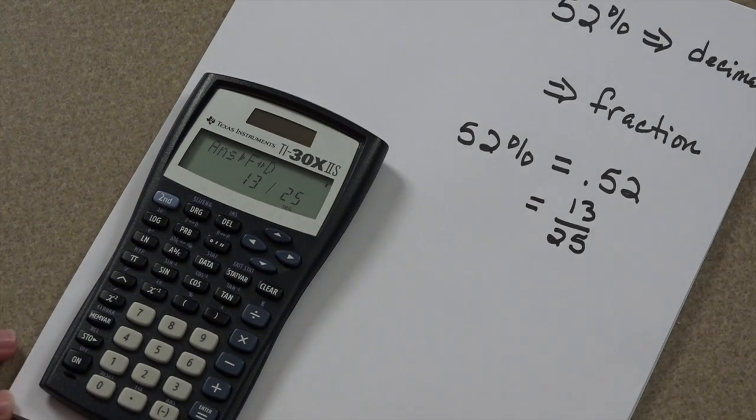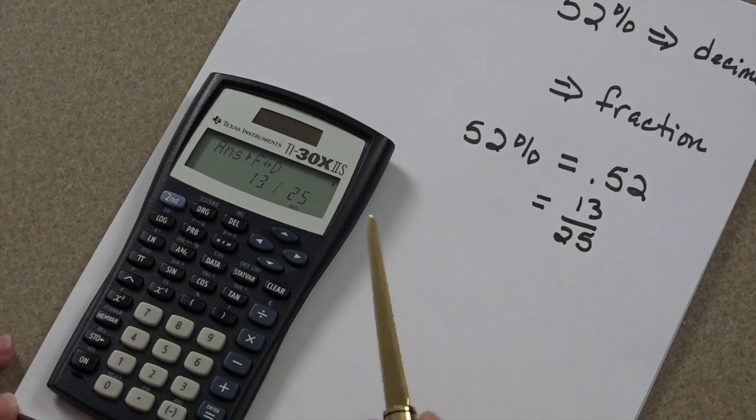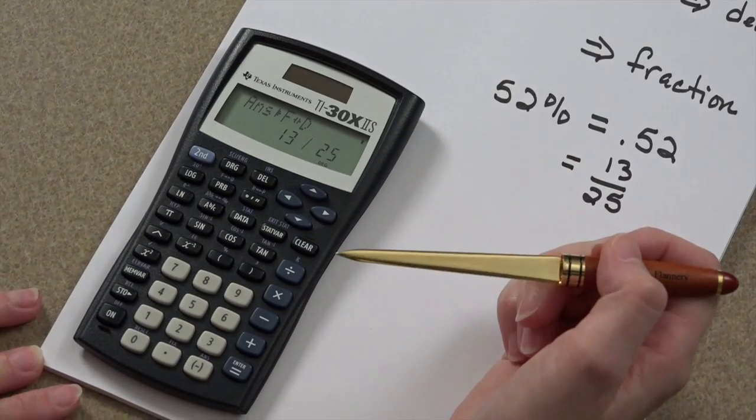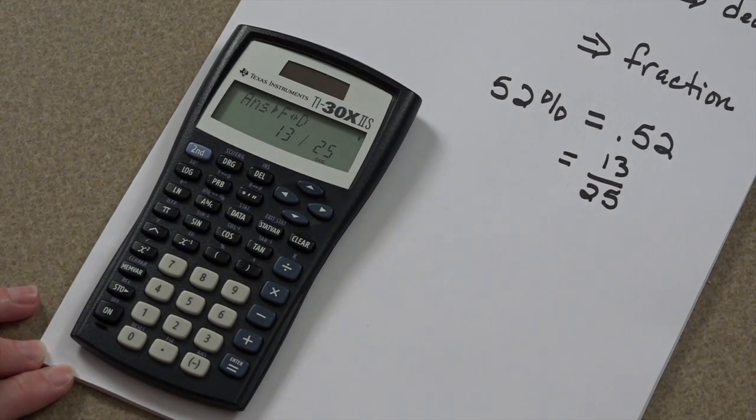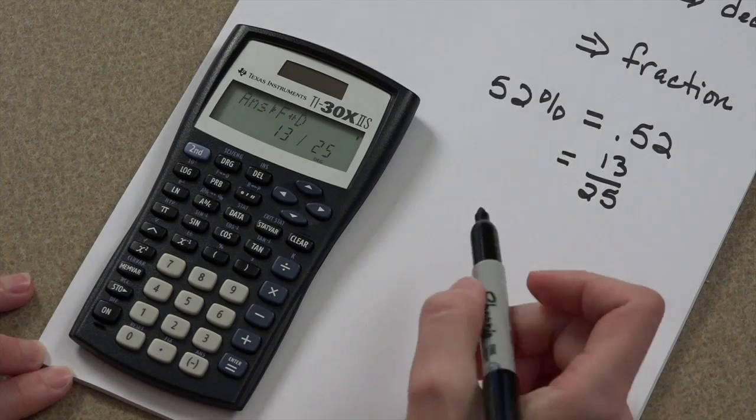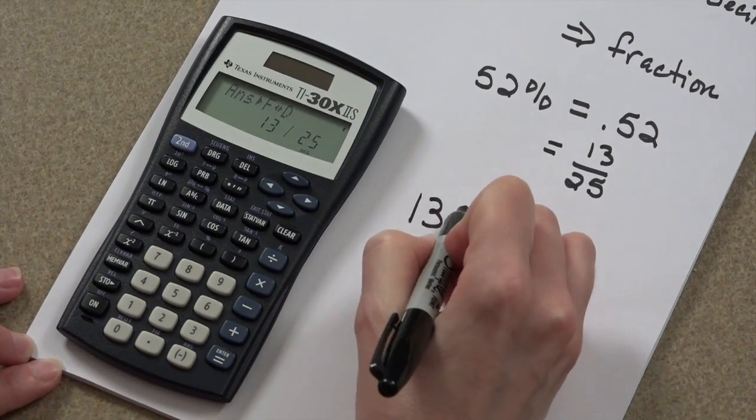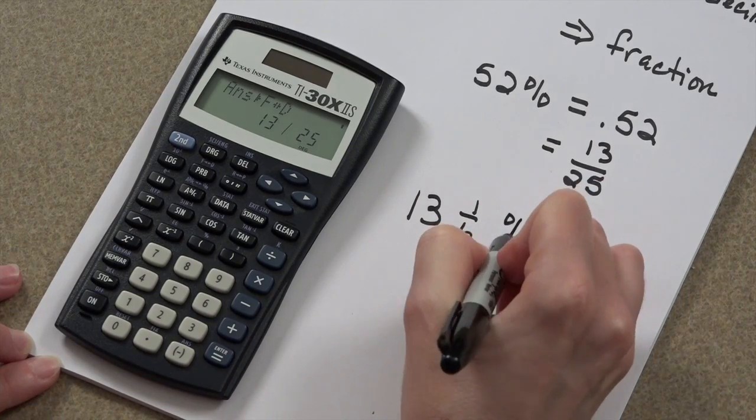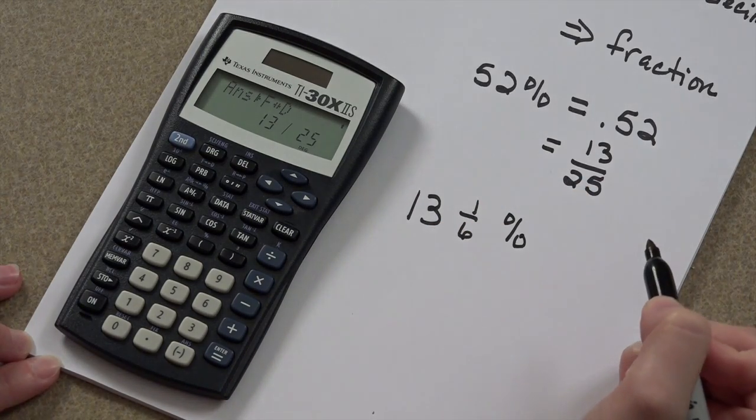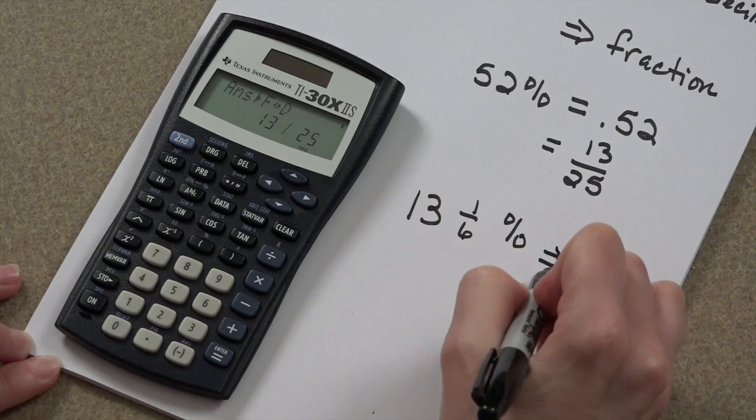One of the other things your calculator can do is take mixed numeral percentages. This is what I'm talking about. You have 13 and 1 sixth percent that needs to transfer over to a decimal.